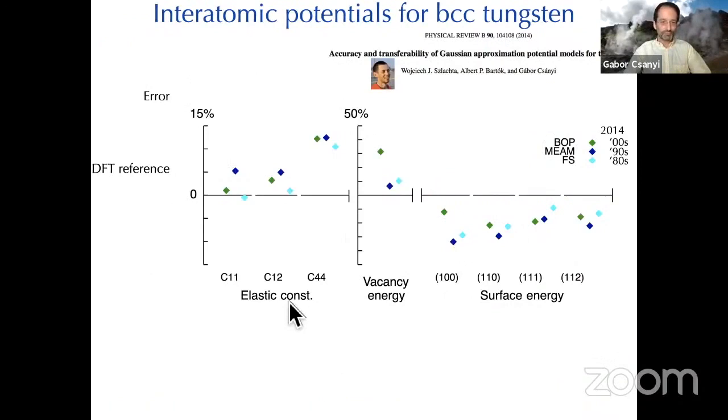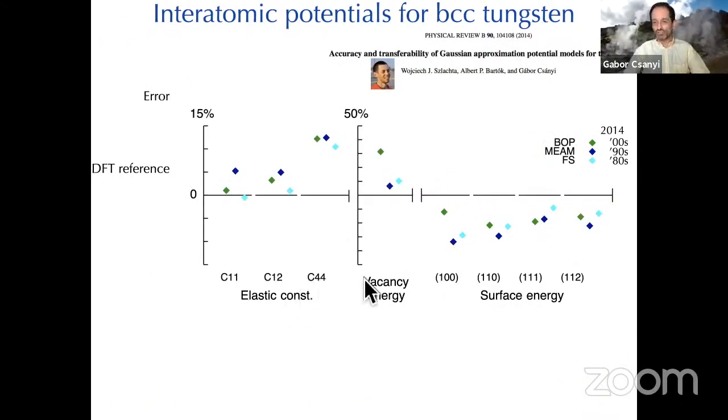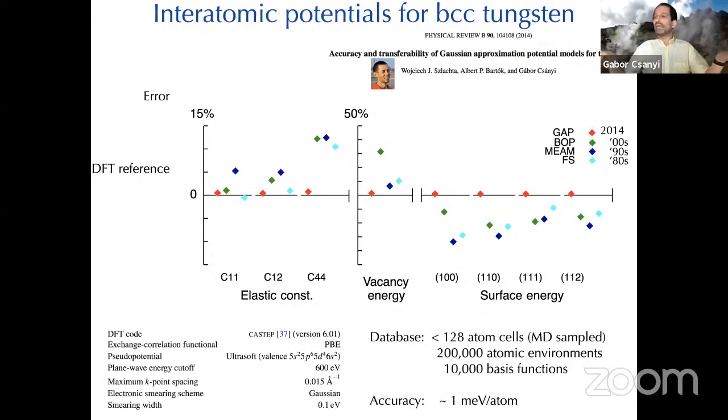Here's another example for tungsten. This is slightly earlier work. If you wanted to simulate BCC tungsten and you went through the available models from the 80s, 90s, and the noughties, you get these sorts of accuracies compared to some reference. Once you turn on these kernel models based on the environment, you just nail it.